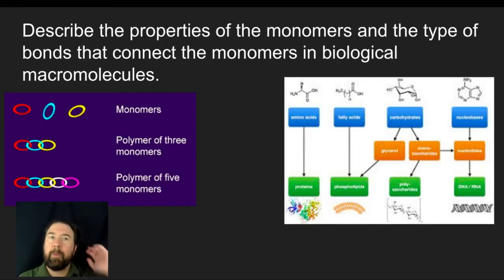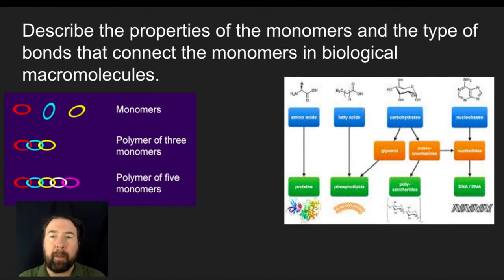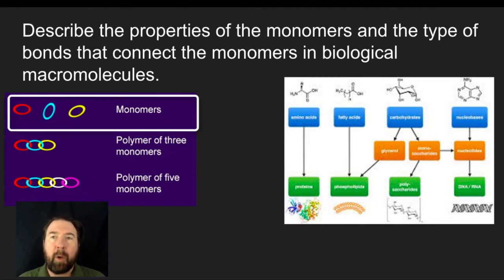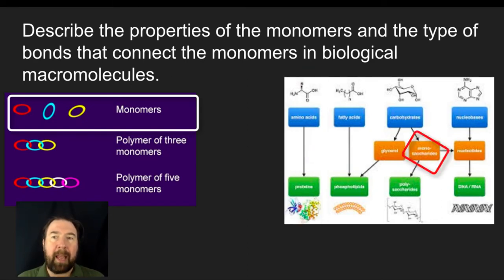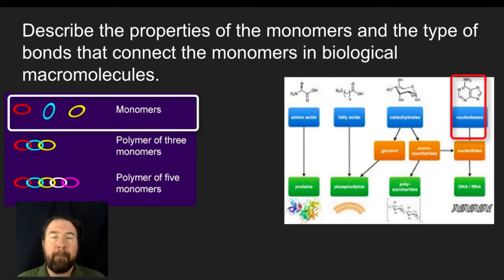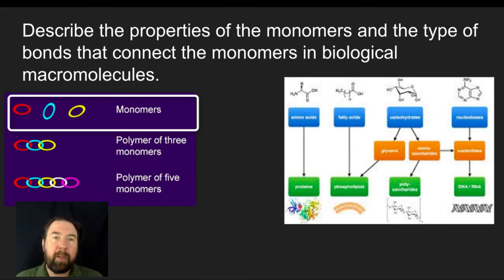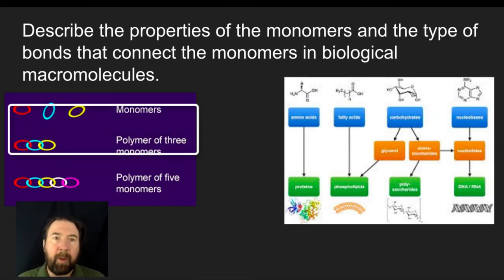We're going to describe the properties of monomers and the types of bonds that connect those monomers in biological macromolecules. But before we do, let's get into the detail about what is a monomer and what is a polymer. A monomer is a single subunit. An amino acid is the monomer used to build a protein, a monosaccharide is the monomer used to build a polysaccharide, and a nucleotide is the monomer used to build a nucleic acid.